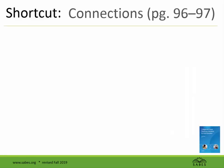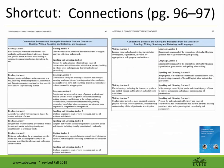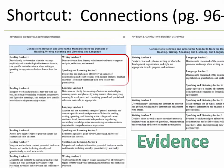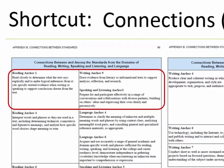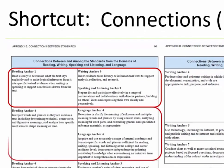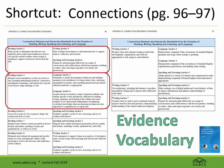There is intentional overlap between the four domains — content is repeated in more than one domain to underscore its importance. In addition, each standard is not meant to be a separate focus for instruction and assessment; they are meant to be bundled together. This chart on pages 96 and 97 of the CCRSAE illustrates some of the connections and deliberate redundancies. For example, finding and using evidence comes up in Reading Anchor 1, Writing Anchor 9, and Speaking and Listening Anchor 1. Academic or Tier 2 vocabulary has a central role in comprehending complex text — Reading Standard 4 and Language Standards 4 and 6 all focus on academic vocabulary.